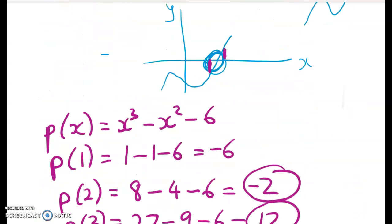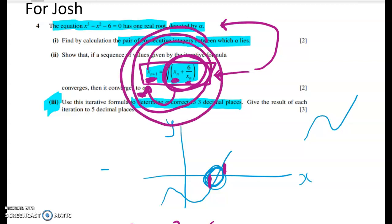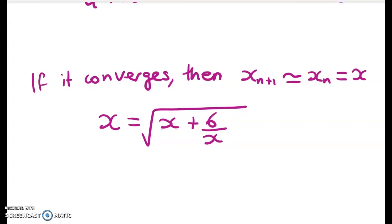Right so what have I done there? Well my formula has got x n plus 1 on this side and I've got x n here and x n here. So this is my starting point and this is my updated value. And then we go round and round and hopefully they get closer and closer together. So if it's going to converge then those two numbers are the same thing. So this equation here must be true. What we have to do now is just rearrange.